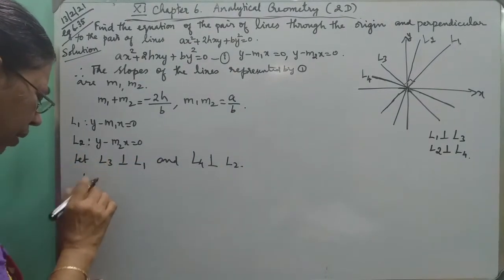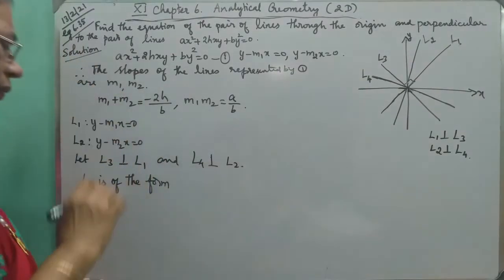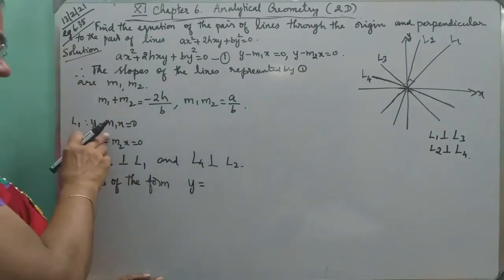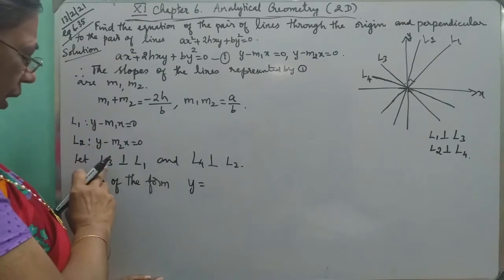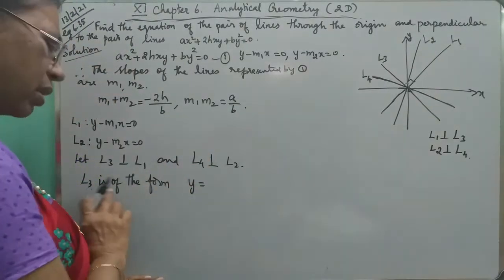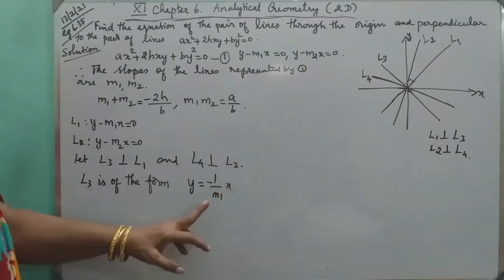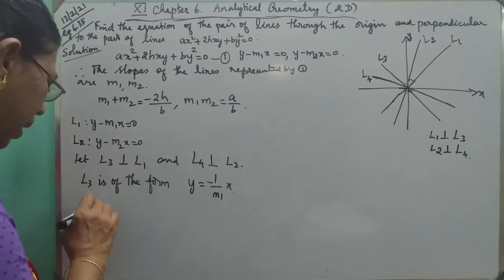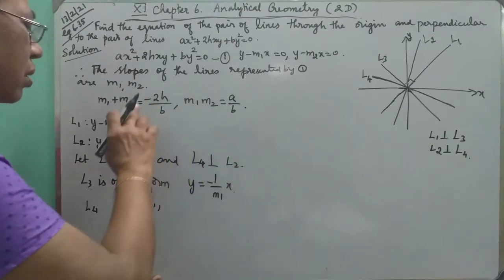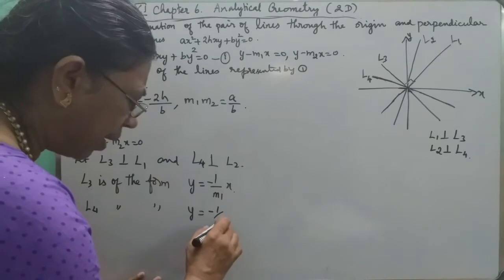Therefore, L3 is of the form: L3 is equal to y minus minus 1 by m1 times x. That is the perpendicular slope. And L4 equals y minus 1 by m2 times x.